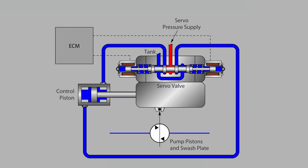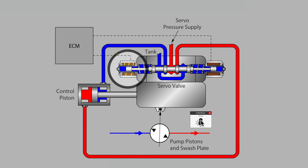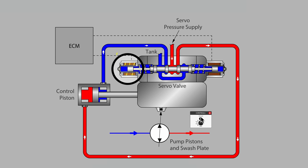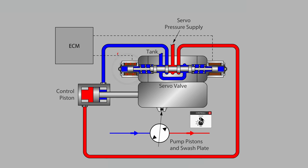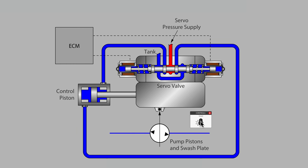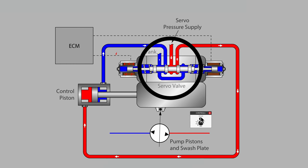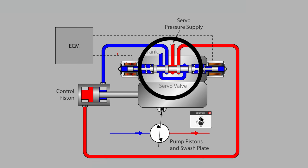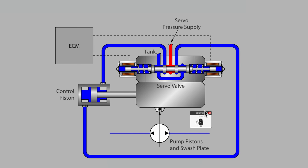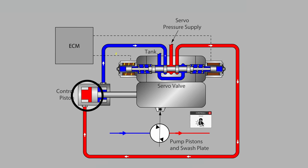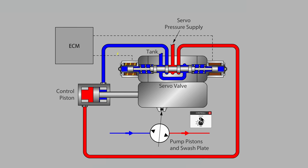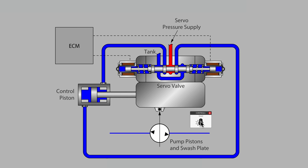When the operator requests pump oil flow for forward propulsion, a small amount of current is sent to one of two solenoids on the servo valve that is typically mounted to the pump case. The current moves the spool that allows the servo pressure to enter the extend port on the control piston. The control piston moves the pump swashplate on stroke at a minimum flow rate.